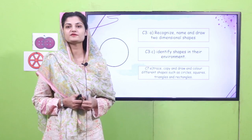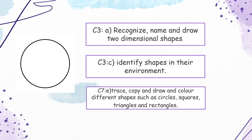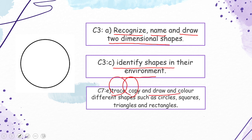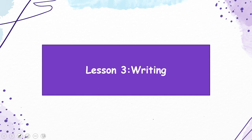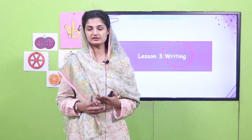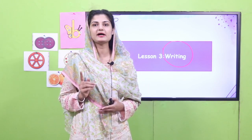There are a few instructions for today's lesson: recognize, name and draw two-dimensional shapes; identify shapes in their environment; trace, copy, draw and color different shapes such as circles, squares, triangles and rectangles. We are also going to talk about your writing. There are a few things in the description of this video — lesson plans, PowerPoint, worksheet and extra activities — which you can get simply by clicking on the link.